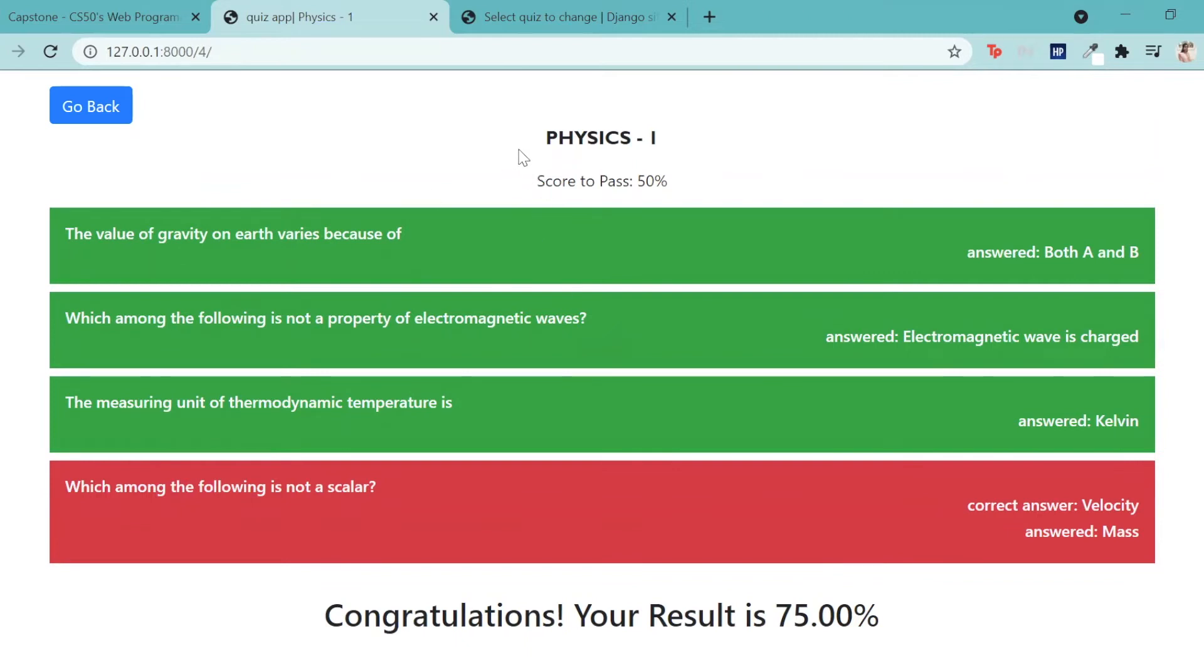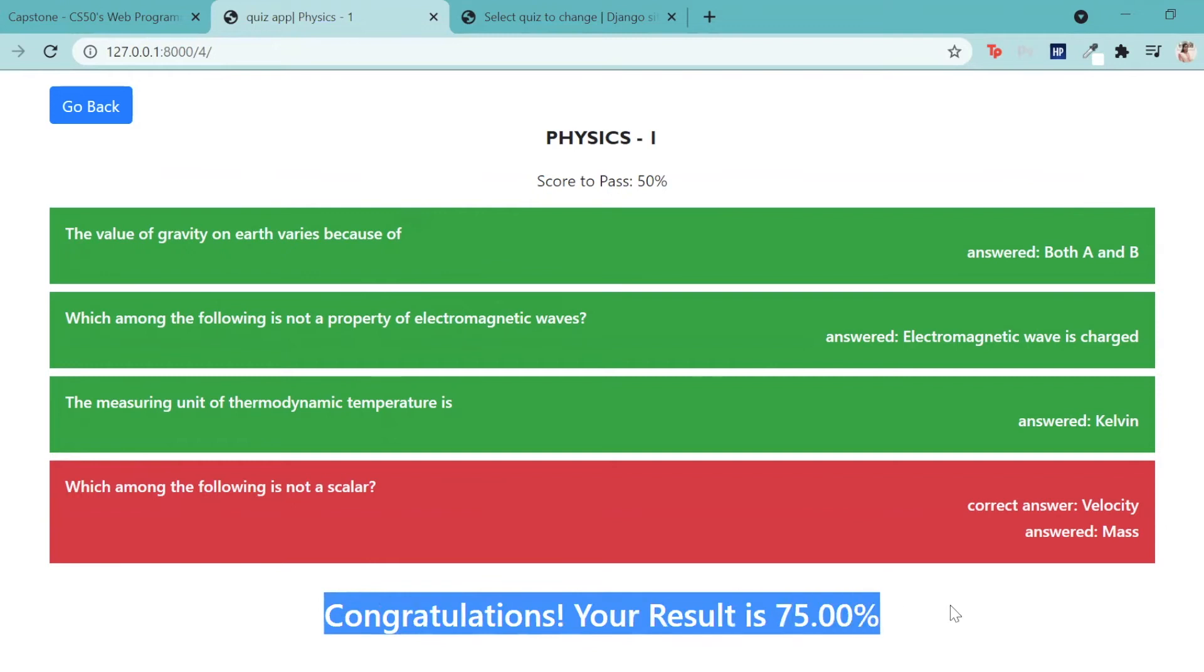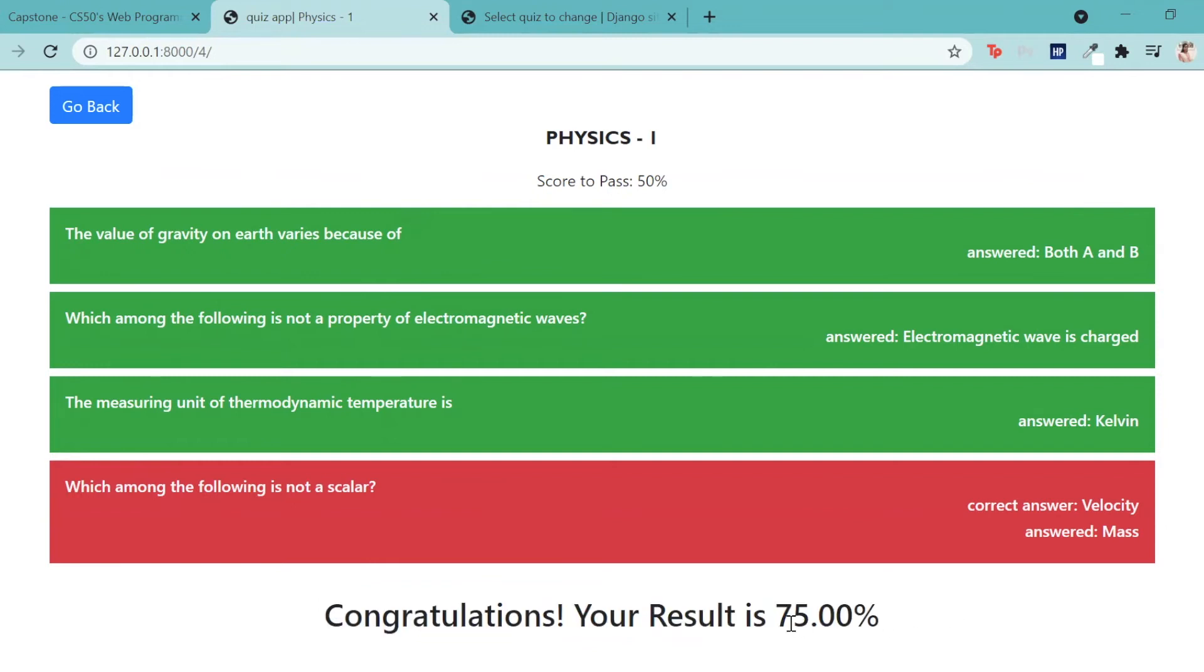This is the next specification, which is the results page. So since I clicked on save, it took me to the results page where I can see my score along with a detailed review of the questions that were correct or incorrect. It also gives me a review of which questions I had unattempted. Down below is a message saying congratulations, your result is 75%. Since I have passed the score to pass mark.